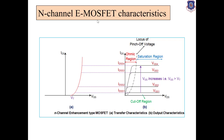The enhancement of N-channel due to positive VGS can be explained by two graphs. First, the input voltage versus current graph — ID versus VGS — is known as the transfer characteristic. Second, the output graph — ID versus VDS — is known as the output characteristic or drain characteristic.